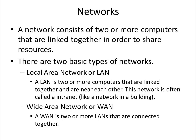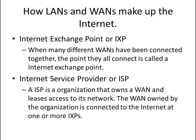Next, you have a wide area network, or WAN. A wide area network is two or more local area networks that are connected together. Now, how do local area networks and wide area networks make up the internet? First, you have internet exchange points, or IXPs. When many different wide area networks are connected together, the point at which they all connect is an internet exchange point.